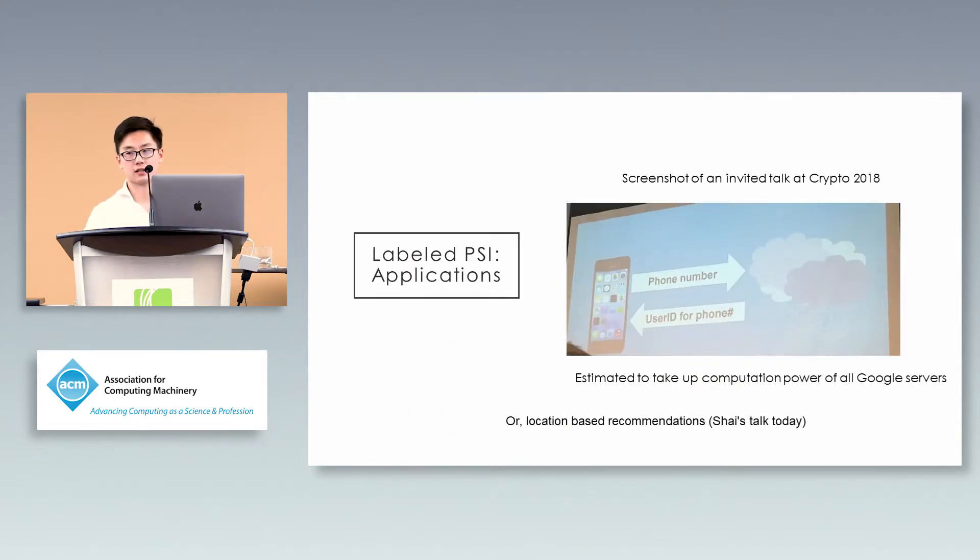Label PSI has many applications. This screenshot is from an invited talk at Crypto 2018. Google has this problem of having users submit phone numbers to the cloud and retrieve user IDs attached to those phone numbers for some Google service. Like private contact discovery, but instead of just yes or no, you retrieve an ID or public key, so after this protocol you can directly talk to your friend using this public key.